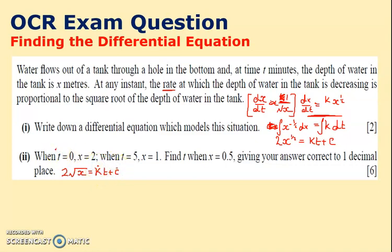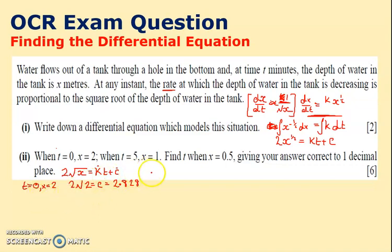Using the first condition, t equals 0 when x equals 2: substituting gives 2√2 equals C, which is approximately 2.828. So the equation becomes 2√x equals kt plus 2.828.